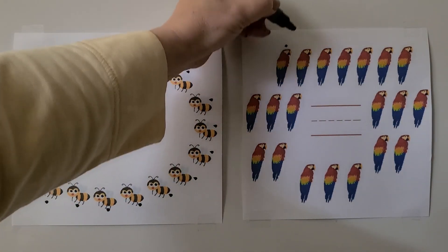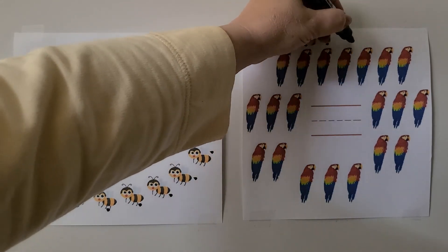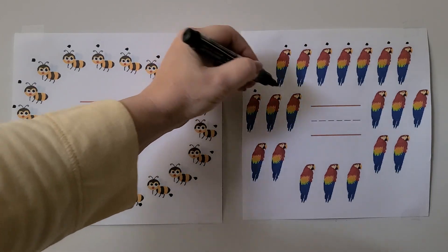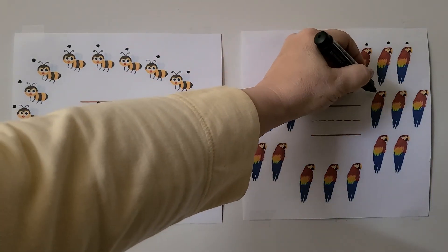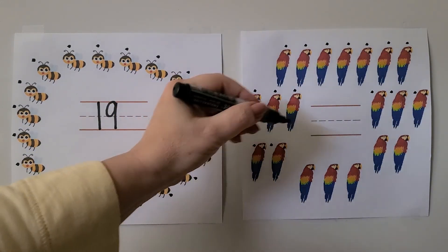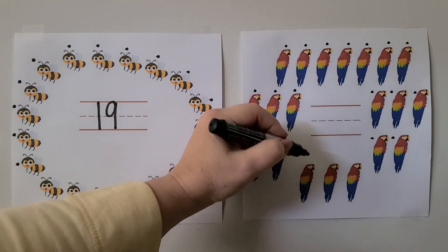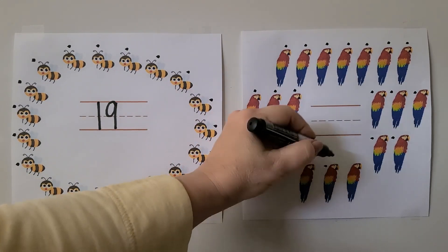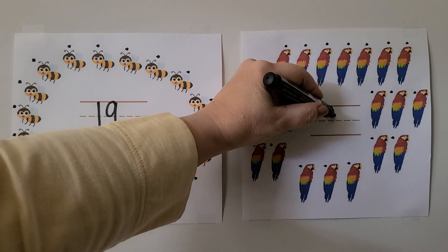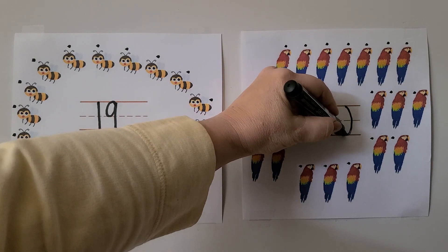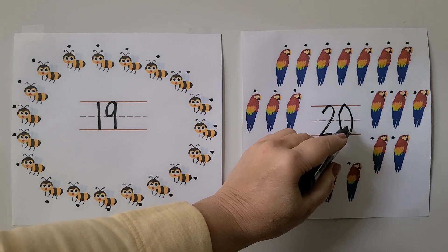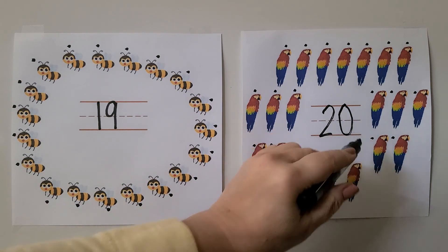Let's count. We can count this row up here. We have 1, 2, 3, 4, 5, 6, 7, 8, 9, 10, 11, 12, 13, 14, 15, 16, 17, 18, 19, 20. We can write the number 20. It's a two with a zero next to it. The number 20 is a two followed by a zero, and they're together: twenty.